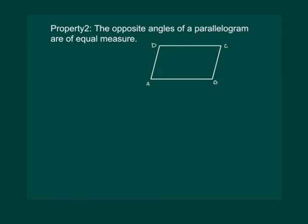The second property of parallelogram states that the opposite angles of a parallelogram are of equal measures — that means angle B is equal to angle D, and angle A is equal to angle C.